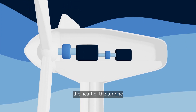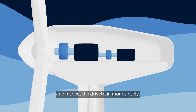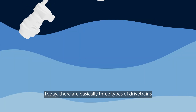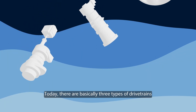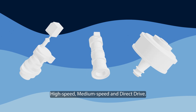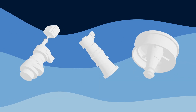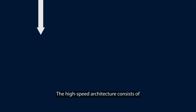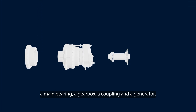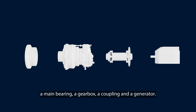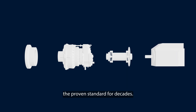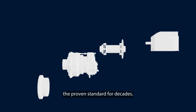The heart of the turbine — the drivetrain — deserves a closer look. Today there are basically three types of powertrains: high speed, medium speed, and direct drive. A high-speed architecture consists of a main bearing, a gearbox, a coupling, and a generator. These four components are the proven standard for decades.